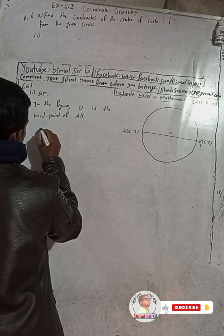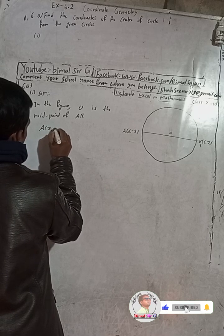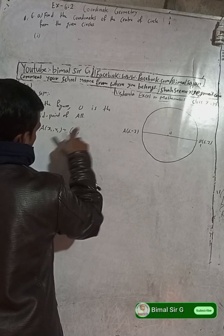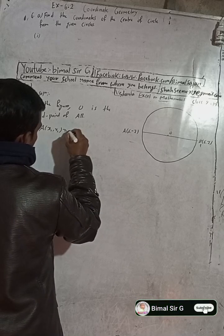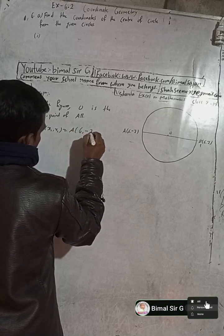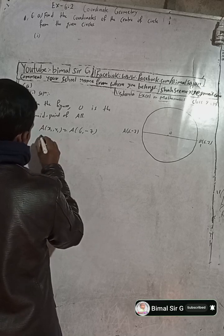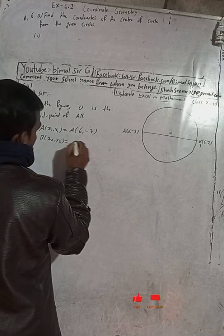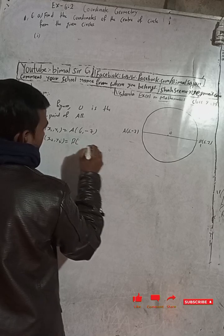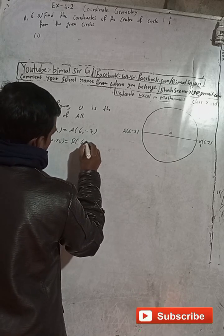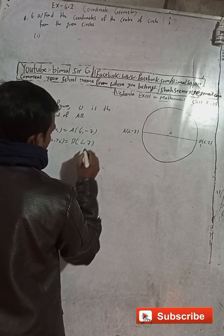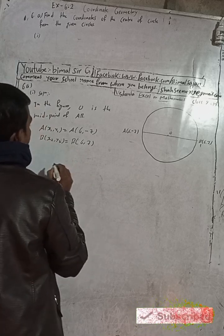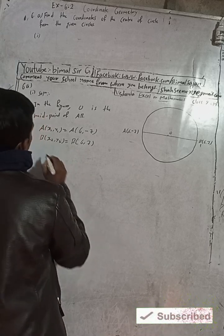Here, A(x1, y1) is equal to A(6, −7) and B(x2, y2) is equal to B(6, 7).